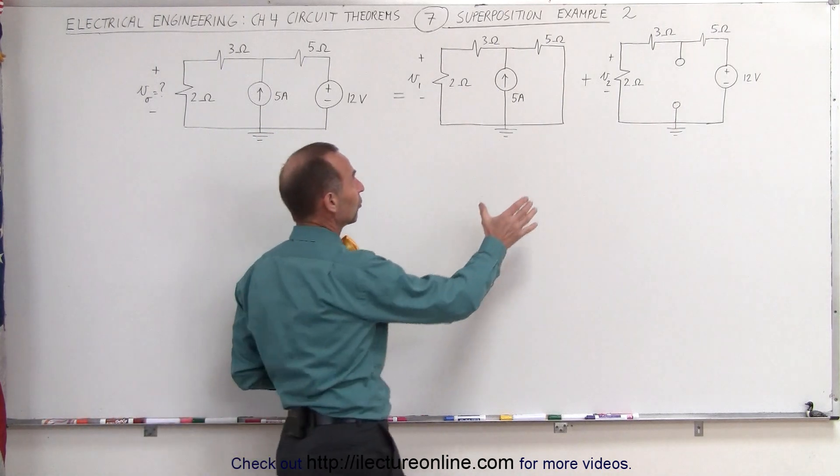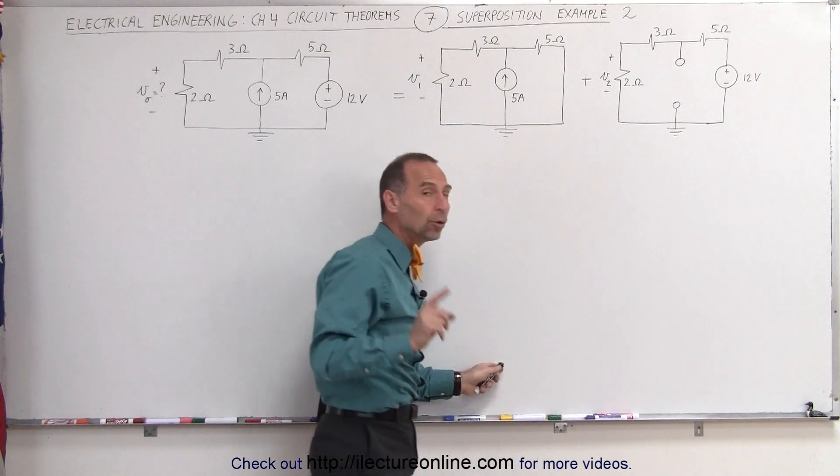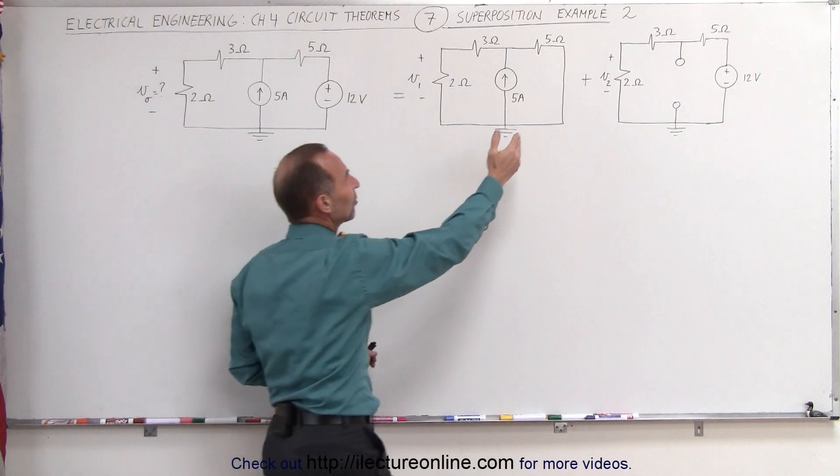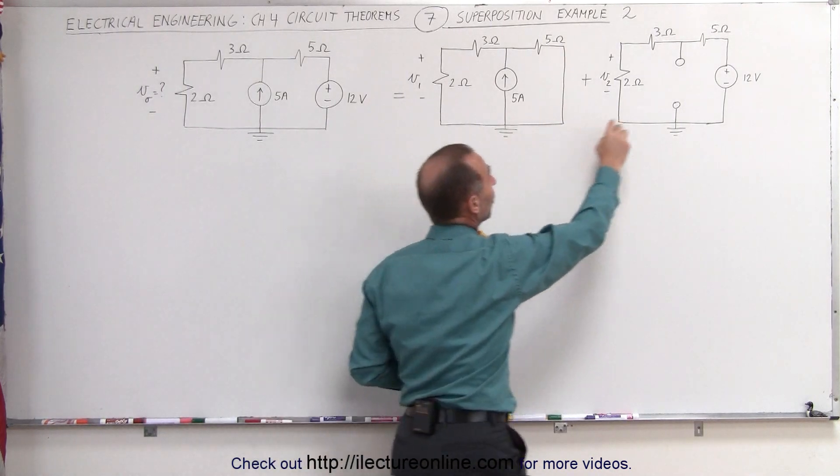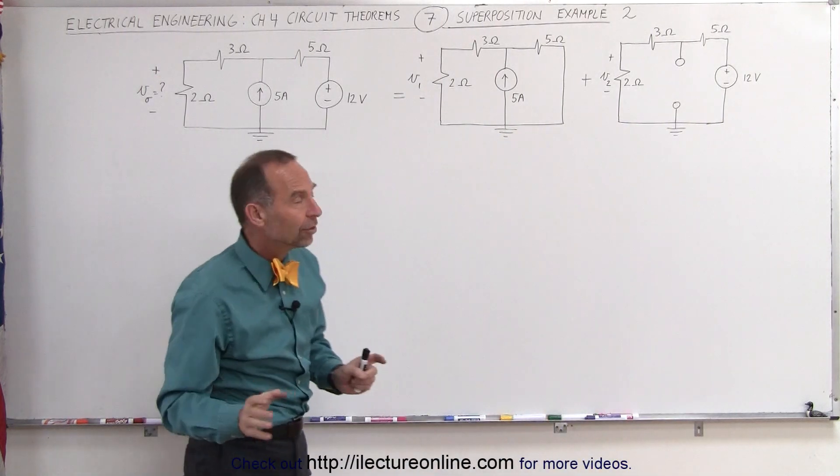We can break it apart into two circuits. One that only has the current source and one that only has the voltage source. Now notice the difference here. When we remove the voltage source, we simply short it out, short out that circuit. But when we remove the current source, we take it out and we have an open in the circuit. So we handle them differently.